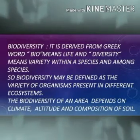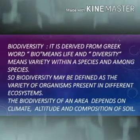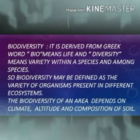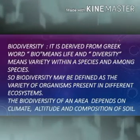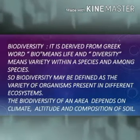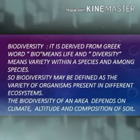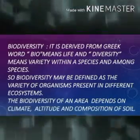Biodiversity is not distributed uniformly — meaning equally — on the earth. It is estimated that today's global biodiversity may consist of more than 100 million kinds of organisms. The biodiversity of an area depends on climate, altitude — meaning height above ground — and composition of cells. Tropical regions, meaning hot regions of the earth, have richer biodiversity, while polar regions, meaning colder regions, have fewer species.